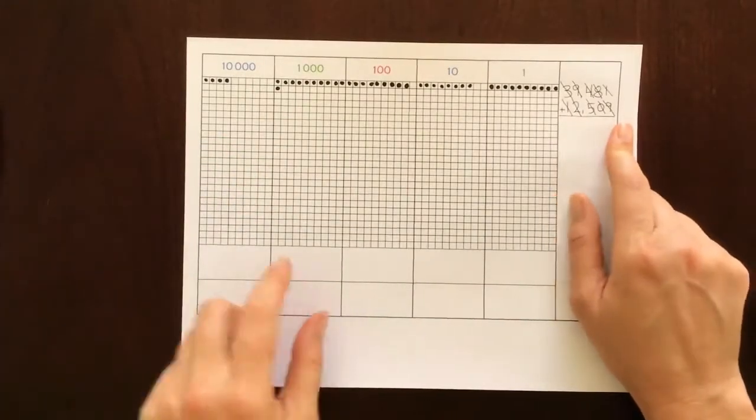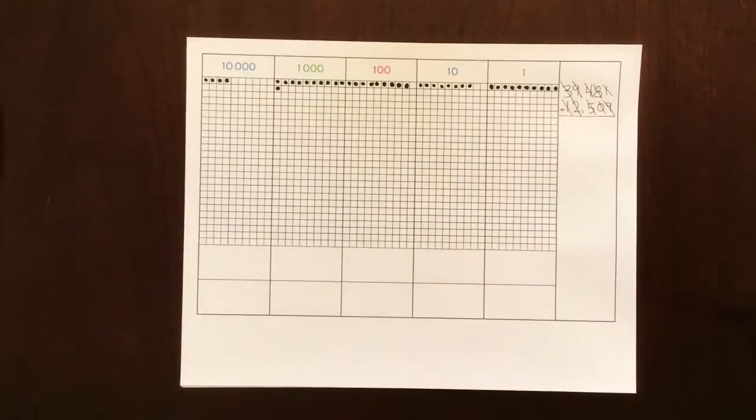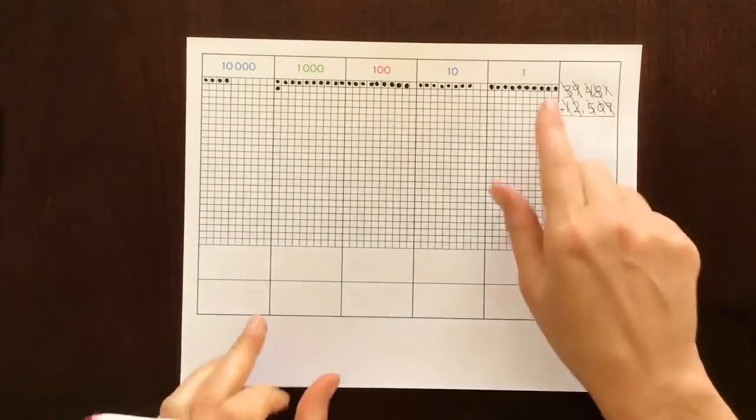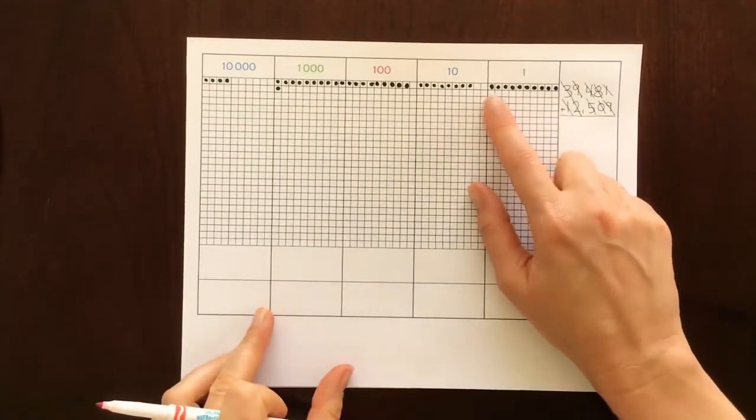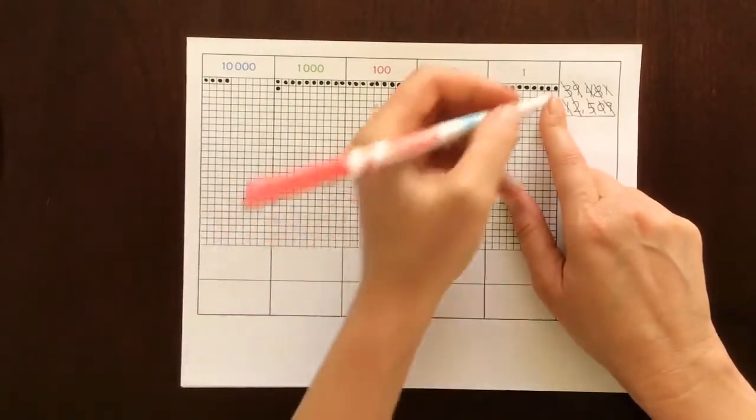We've filled in all of our numbers. Now let's go back and see what we have. I can see in the ones place I have 10 ones, and whenever we have 10 of something we need to exchange it.